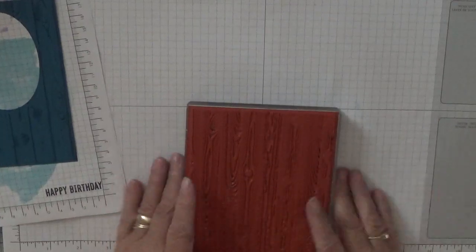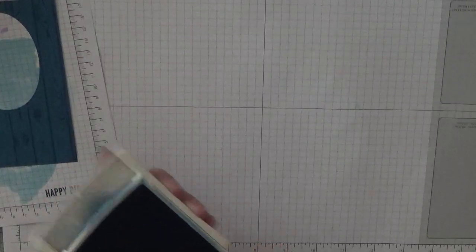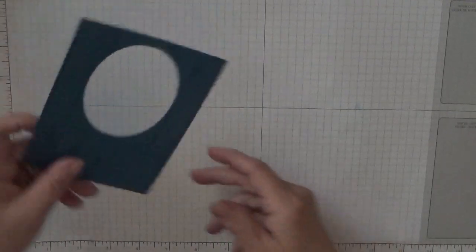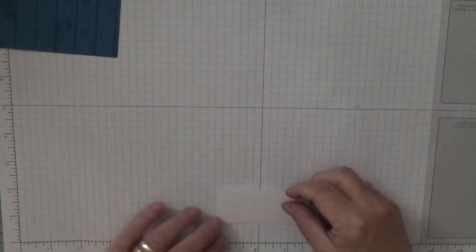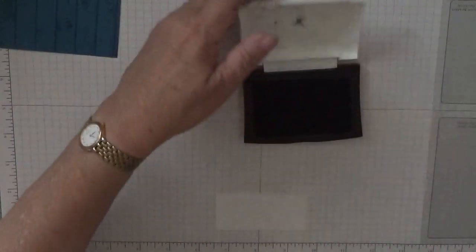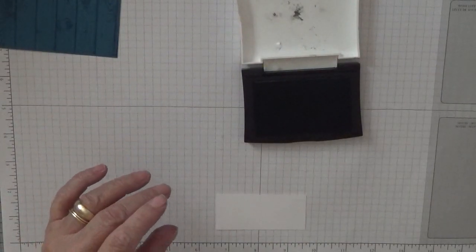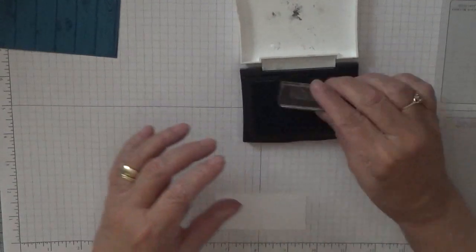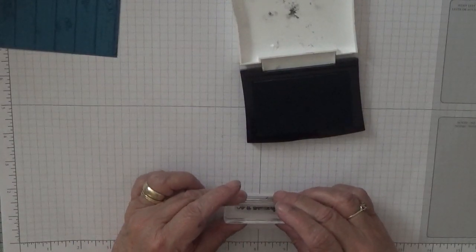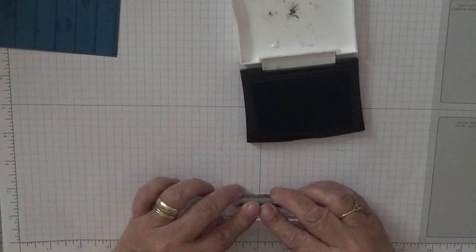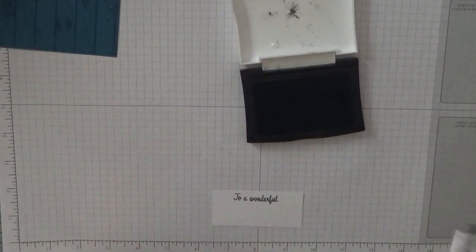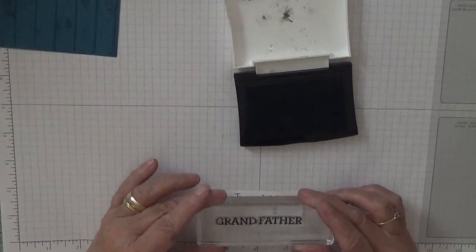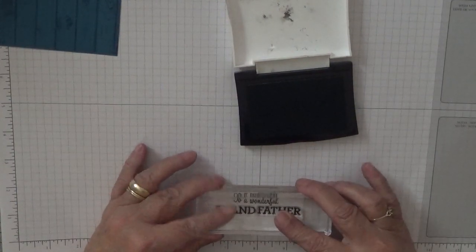That's done. I'm going to stamp our sentiments next. With our black ink, 'to a wonderful,' we're going to put that in the middle to the top.